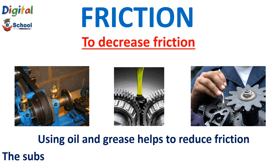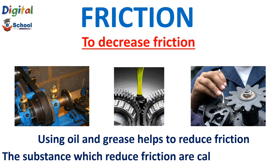The substances that are used to reduce friction are called lubricants. For example, when you open a door and it makes a strange sound, you put oil on the hinge. The oil acts as a lubricant — it reduces friction by forming a thin layer, smoothing the movement of the hinge and eliminating the noise.